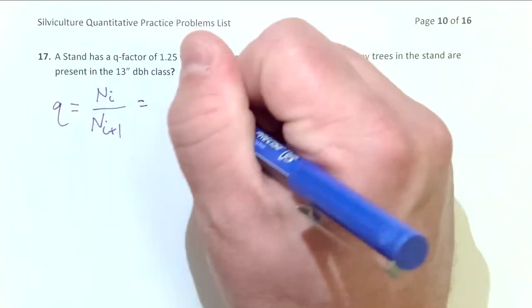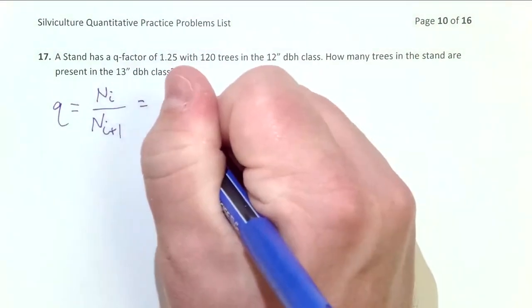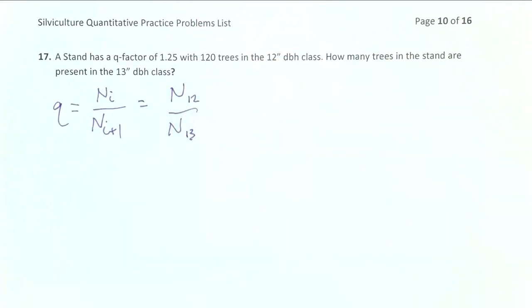So in this case, N sub I will be our 12-inch size class, and N sub I plus 1 is going to be our 13-inch size class.